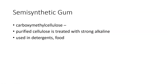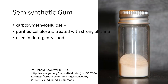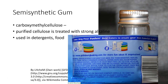Everything discussed so far came from the plant as-is and was used in that natural form. We also have a semi-synthetic gum: carboxymethyl cellulose (CMC). Purified cellulose is treated with a strong alkali, which causes the fibers to break down and become more soluble. This material is then used in detergents and food — sometimes called CMC or cellulose gum. For example, a cake mix label lists cellulose gum, which is carboxymethyl cellulose, to help hold things together. In summary, gums are salts of non-glucose sugars that tend to be indigestible because we lack the enzymes to break them down.